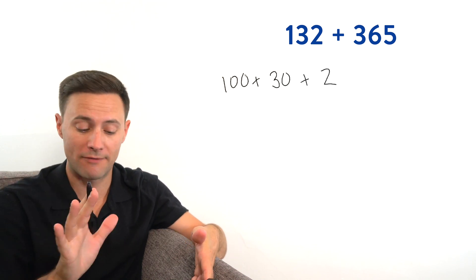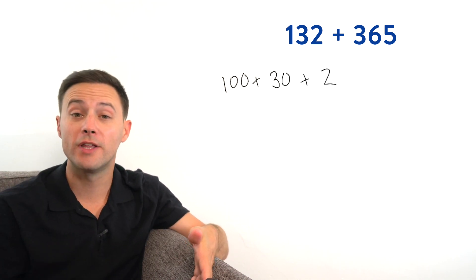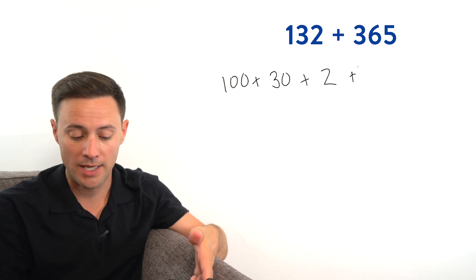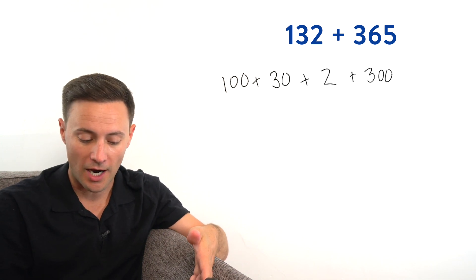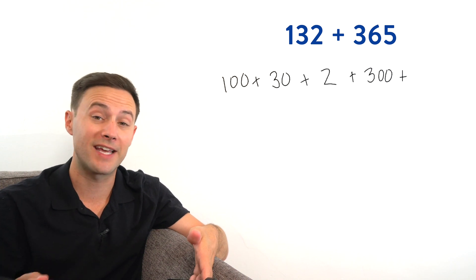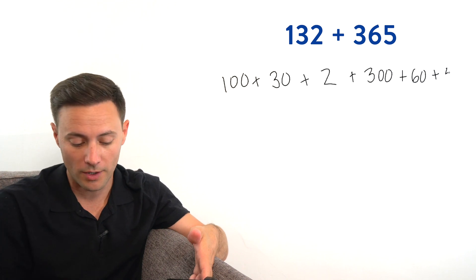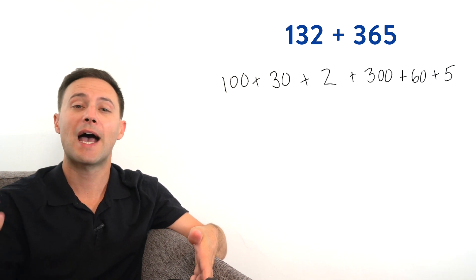Let's do the exact same thing for the 365. Well, that would be we've got 300 plus that six again in the tens place. So that's really a 60. And then five ones. Well, that's just five.